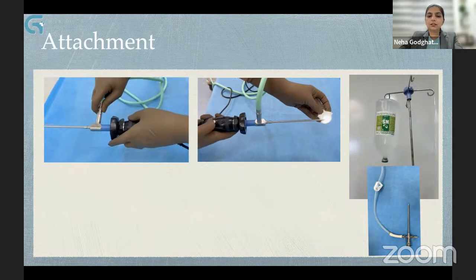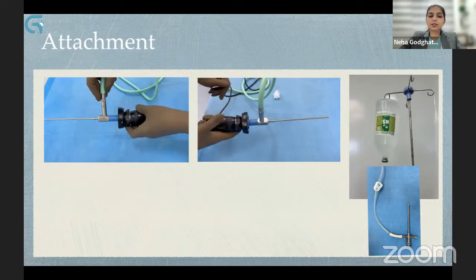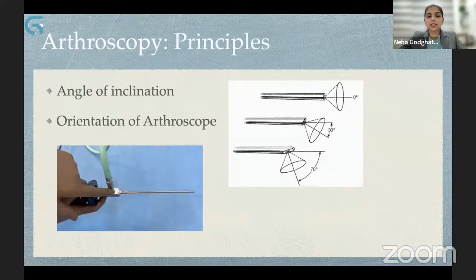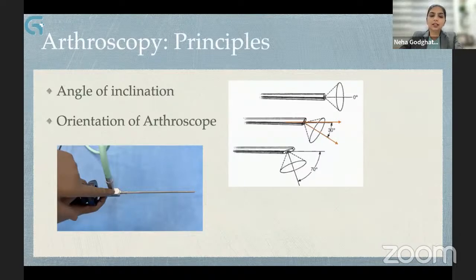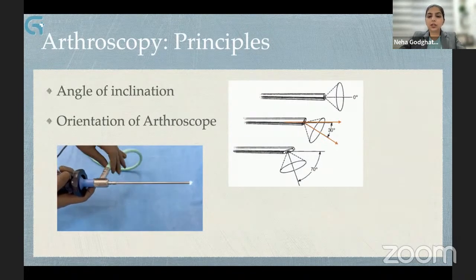On how to connect these optics: the video camera has a quick coupling mechanism where the arthroscope is inserted into the video camera, the quick coupling mechanism is engaged, and the scope is fixed. The fiber optic light cable is then connected. A long press of the white button on the camera will help in white balancing — an important step before starting arthroscopy. The TURP set is attached to the cannula and the other end to a 3-liter NS bottle.